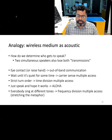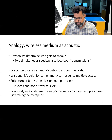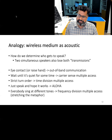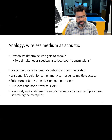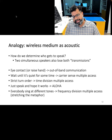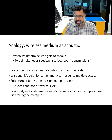An analogy for thinking about wireless communication is to consider who gets to speak in a room. If two people talk simultaneously, there will be a collision and both messages may be lost. Solutions include making eye contact, waiting for silence, taking turns, or speaking in different tones. In wireless communication, we have very similar methods used to allow different devices to communicate at the same time.